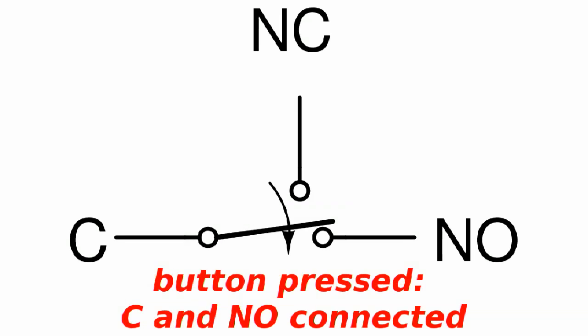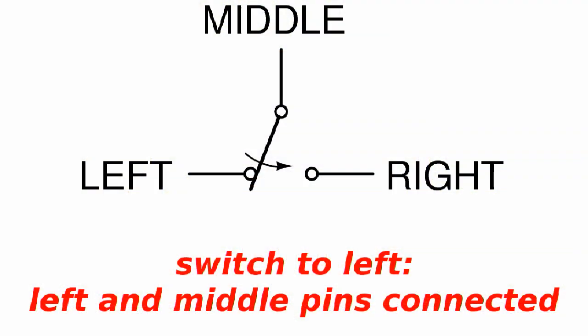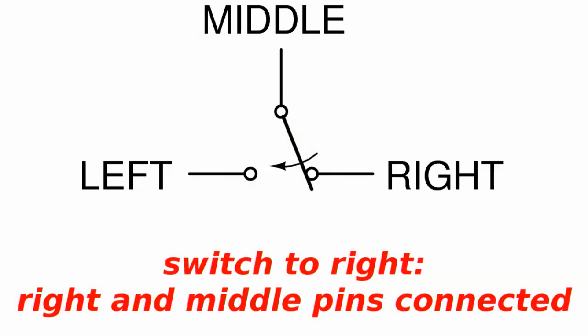When the button is pressed, there's a connection between C and NO. The switches included in the USB NerdKit also have three terminals. They aren't labeled, but it works very similarly to the push button. When the switch is to the left, the left and center pins are connected to each other. While if the switch is to the right, the right and center pins are connected.